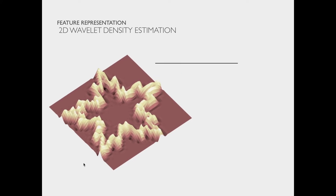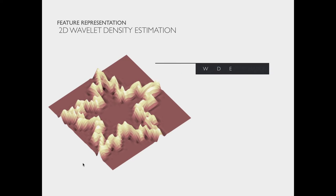One of our contributions through our research was optimizing the wavelet density estimation code. For a data set of 1400 shapes, it would take roughly 17 hours. We shrunk that down to about 18 minutes, making it 100 times faster.